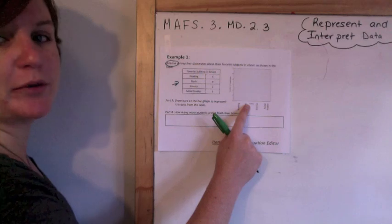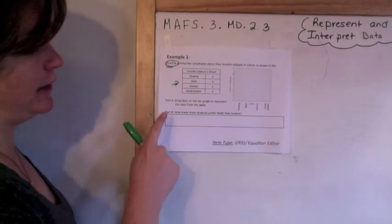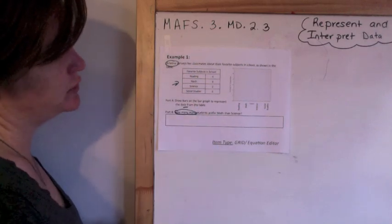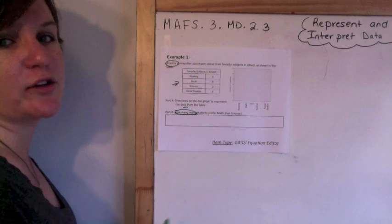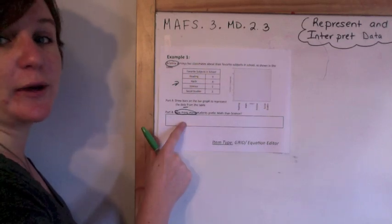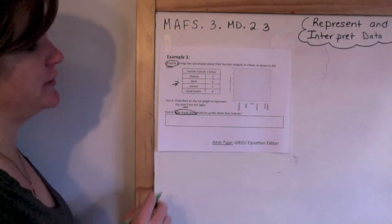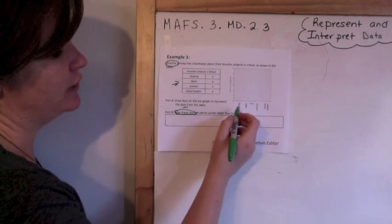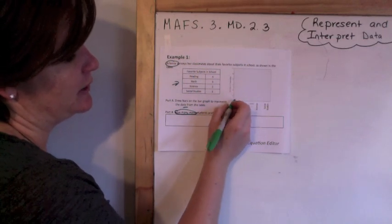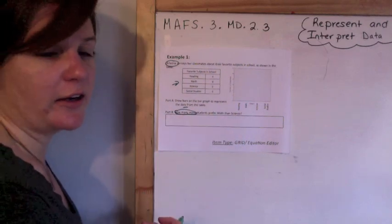Two-parter. Part A: draw bars on the bar graph to represent the data from the table. And part B: how many more, which means I'm going to subtract, students prefer math than science. So this is a grid response and an equation editor. Draw bars on the bar graph to represent the data from the table. So we have our subjects down here and the number of classmates here.